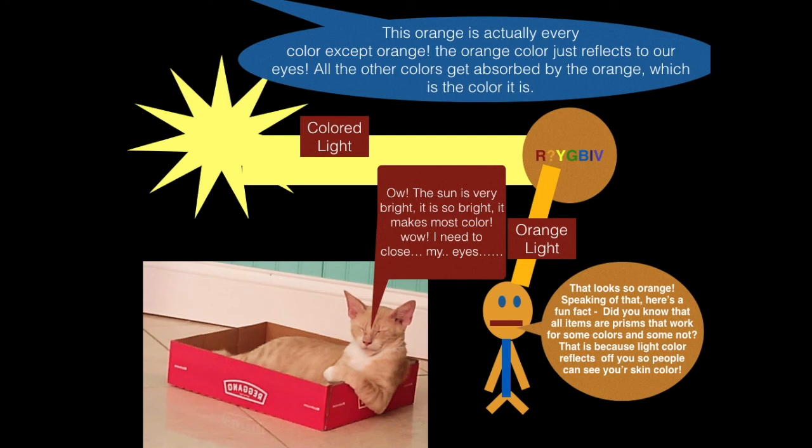The orange is actually every color except orange. The orange color just reflects to our eyes. All the other colors get absorbed by the orange, which is the color it is. See? The colored light goes into the orange, and then only the orange color goes back to the eyes. So, the orange is actually every single color that's not orange. Oh, the sun is really bright. It's so bright, it makes most colors. Wow, I need to close my eyes. Oh, don't close them, Sammy.